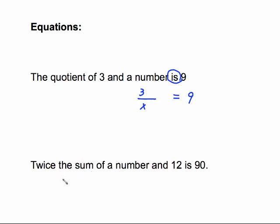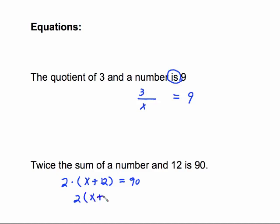'Twice the sum of a number and 12 is 90' — twice means two times, 'sum' gets parentheses with a plus inside: a number and 12, then 'is' gives us the equals sign, and 90. Cleaning up by removing the dot gives us 2(x + 12) = 90.